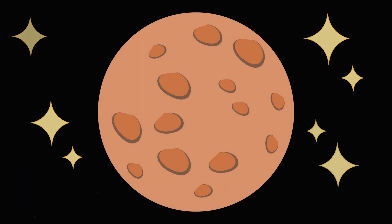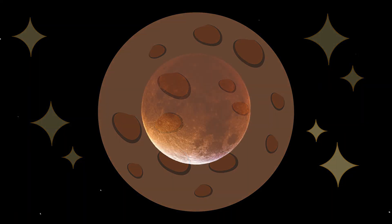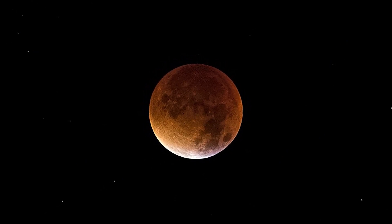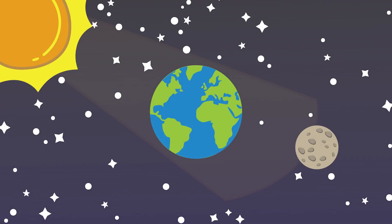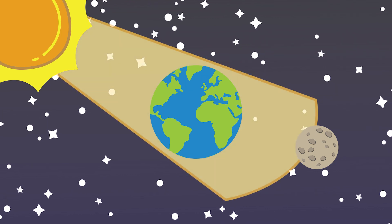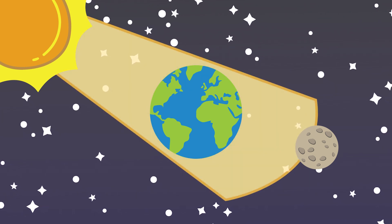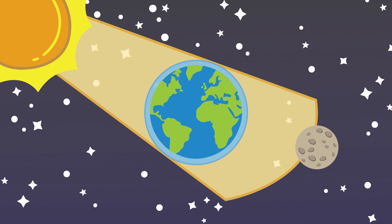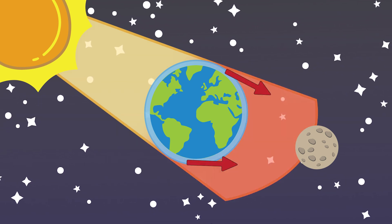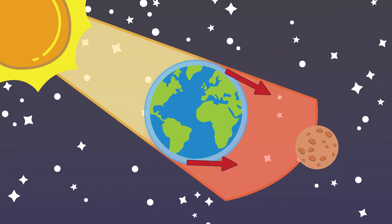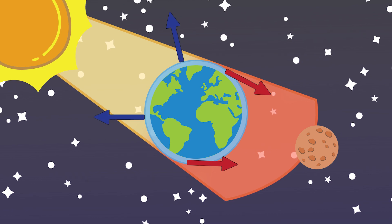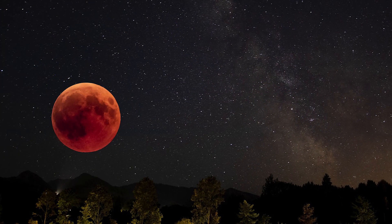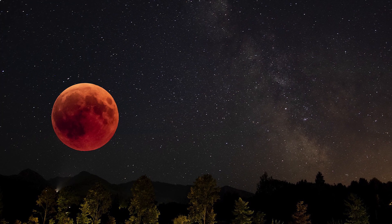A blood moon is a term sometimes used to describe the red color that a total lunar eclipse gets. Sunlight traveling past the earth interacts with the air around the edges, and the red light gets bent in and illuminates the moon, whereas all the blue light gets blocked, causing a dull red or coppery color to the moon during a total lunar eclipse.